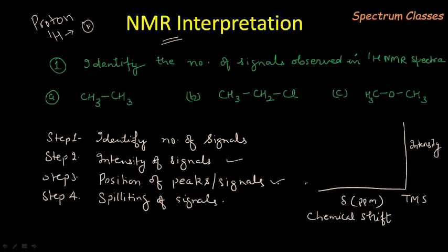The position of the peak is the third step, which means the chemical shift value. Our fourth step is splitting of the signals due to the neighboring protons or neighboring different nuclei which are NMR active. These are the 4 points we are going to discuss one by one, and this is a very basic or preliminary type of interpretation video.